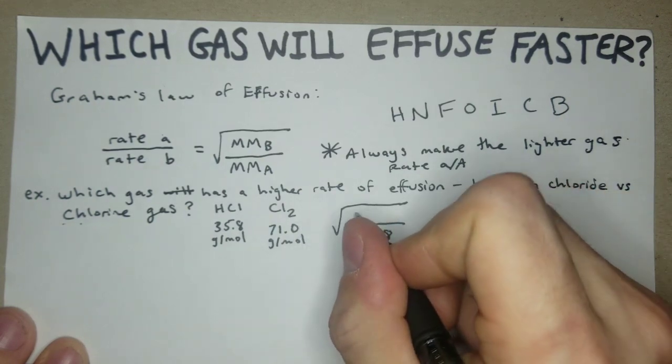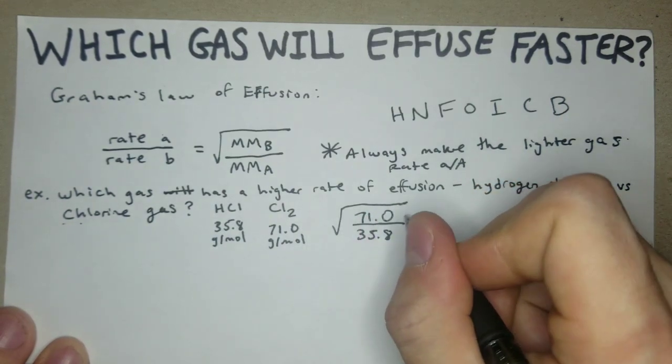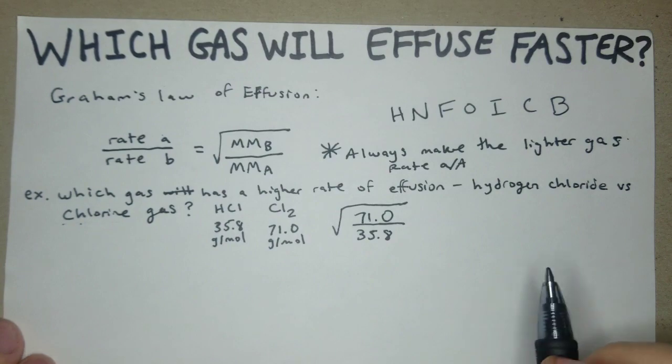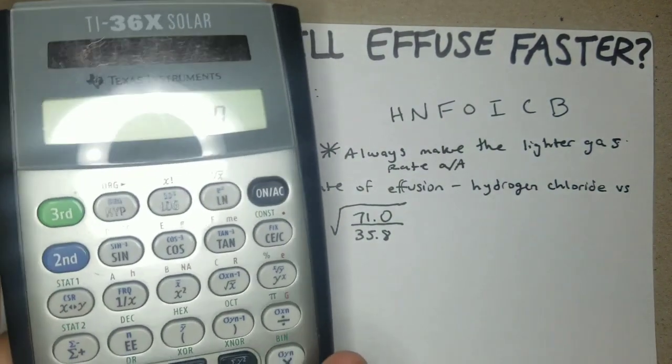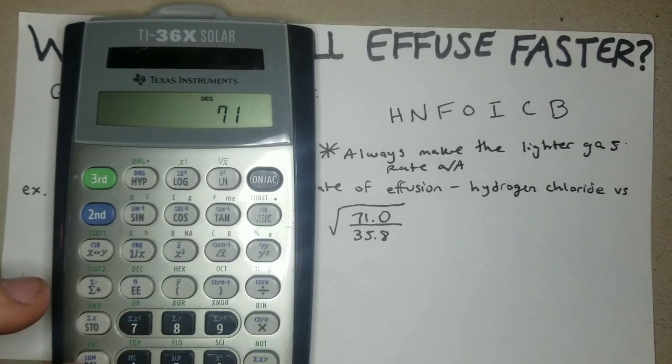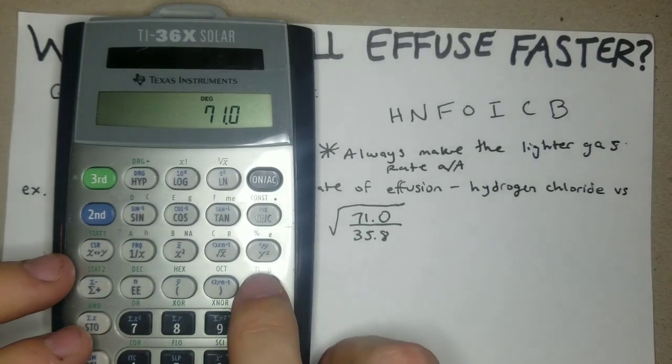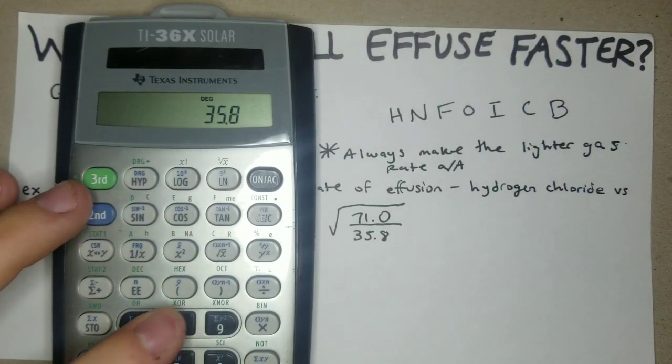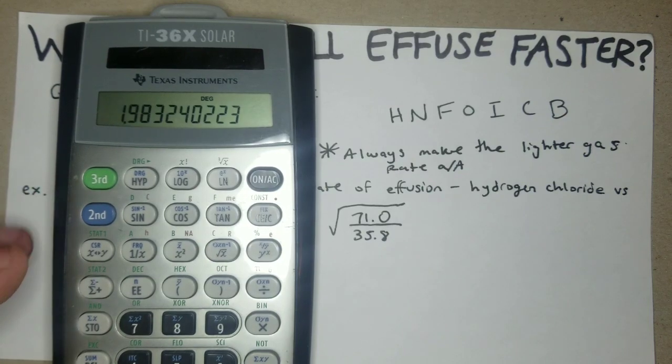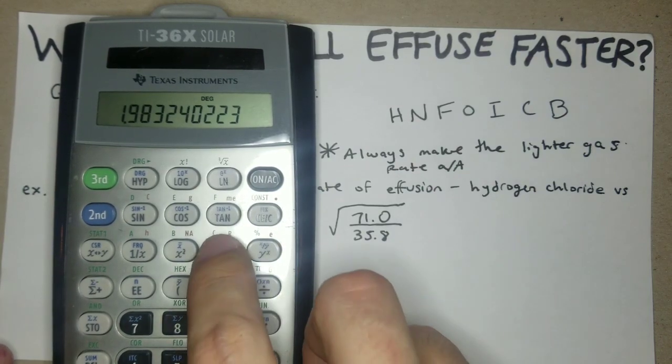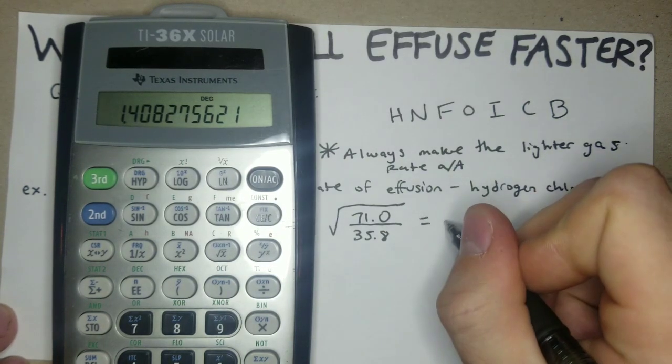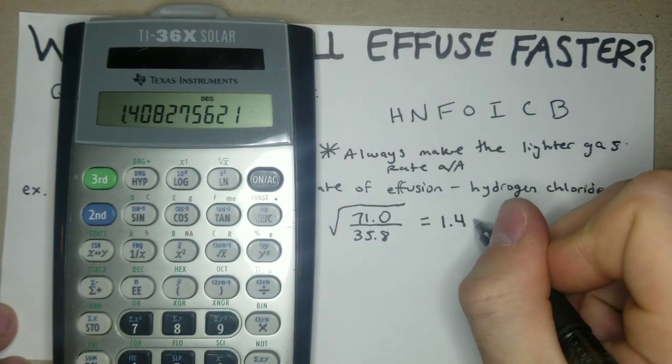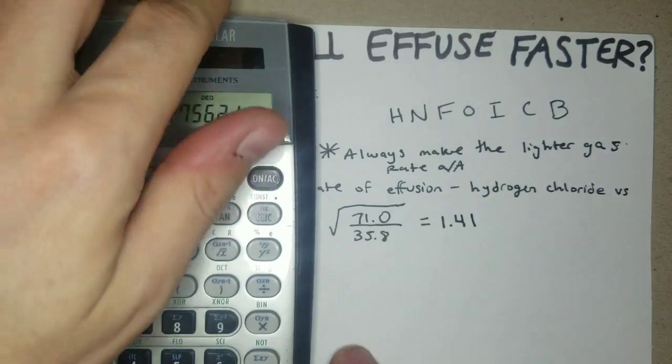Now we just divide this out. So we have 71.0 divided by 35.8, then we just square root that, and we get 1.41.